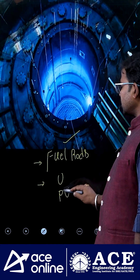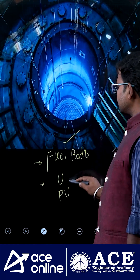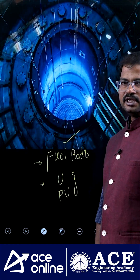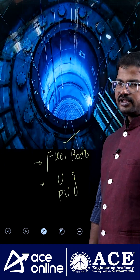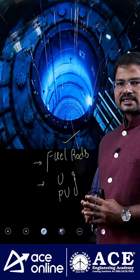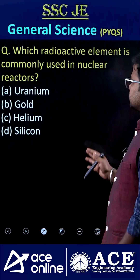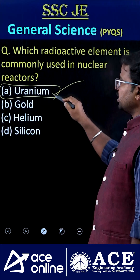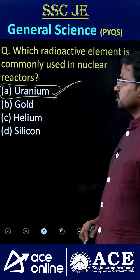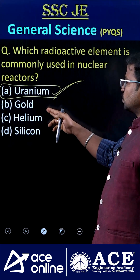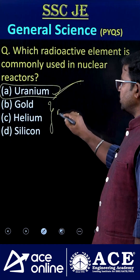In some reactors, plutonium can also be used. Especially in India, we are using these two types — uranium as well as plutonium. Of course, we have a bulk amount of thorium reserves, even though thorium-based reactors are not fully operational yet. So the correct answer is option A — uranium is the radioactive element used to make fuel rods.